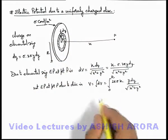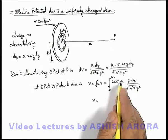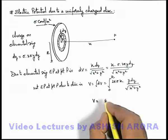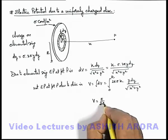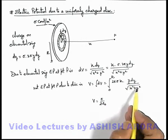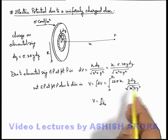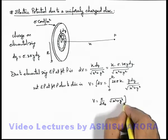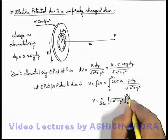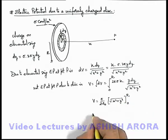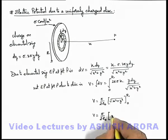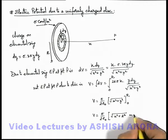2π sigma k is constant, and k is 1 by 4π epsilon naught, so 2π cancels out giving sigma by 2 epsilon naught. Integrating y dy by root of x² plus y², the result is root of x² plus y². Substituting limits from zero to r, the result is sigma by 2 epsilon naught times (root of x² plus r² minus x).